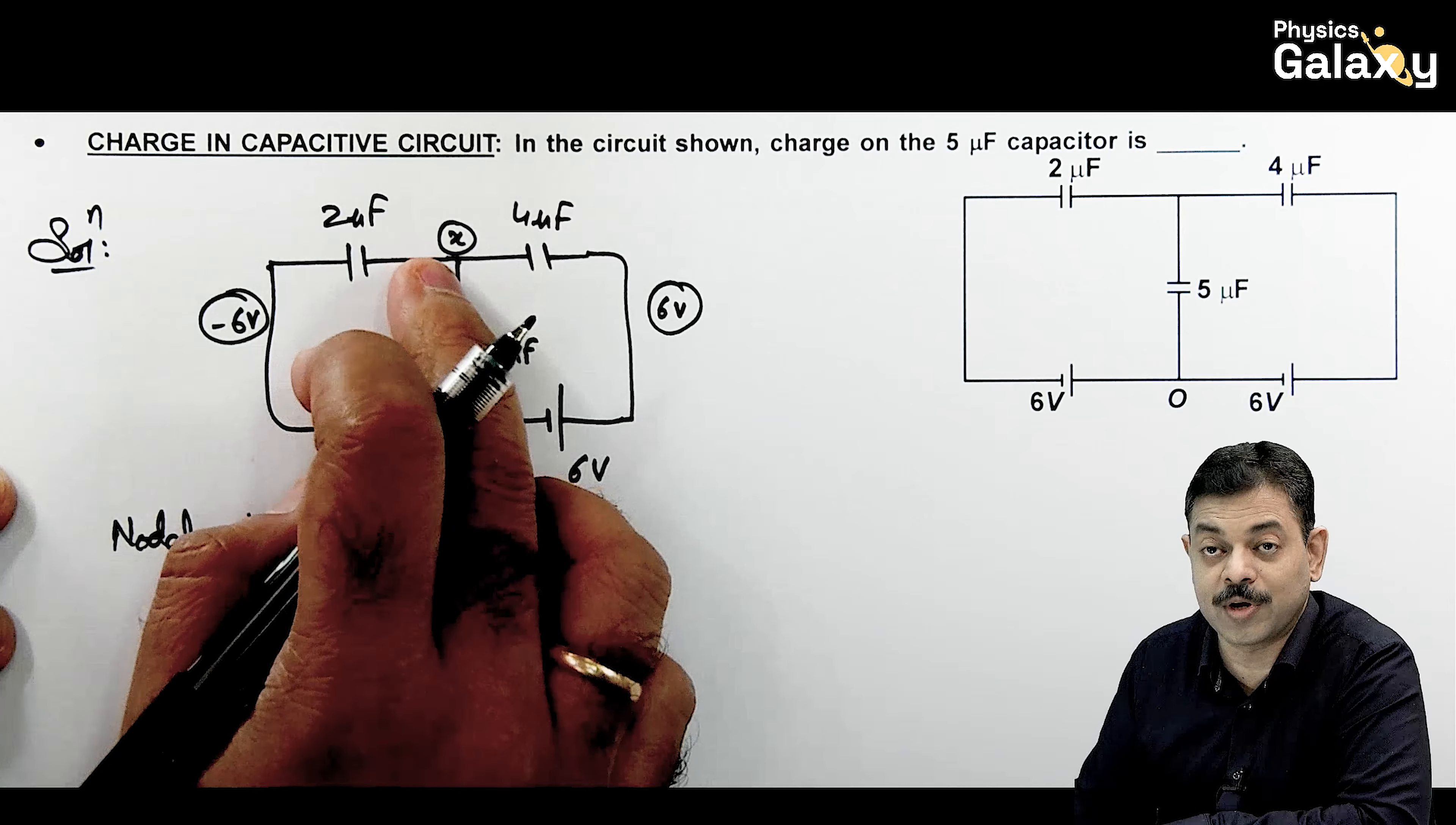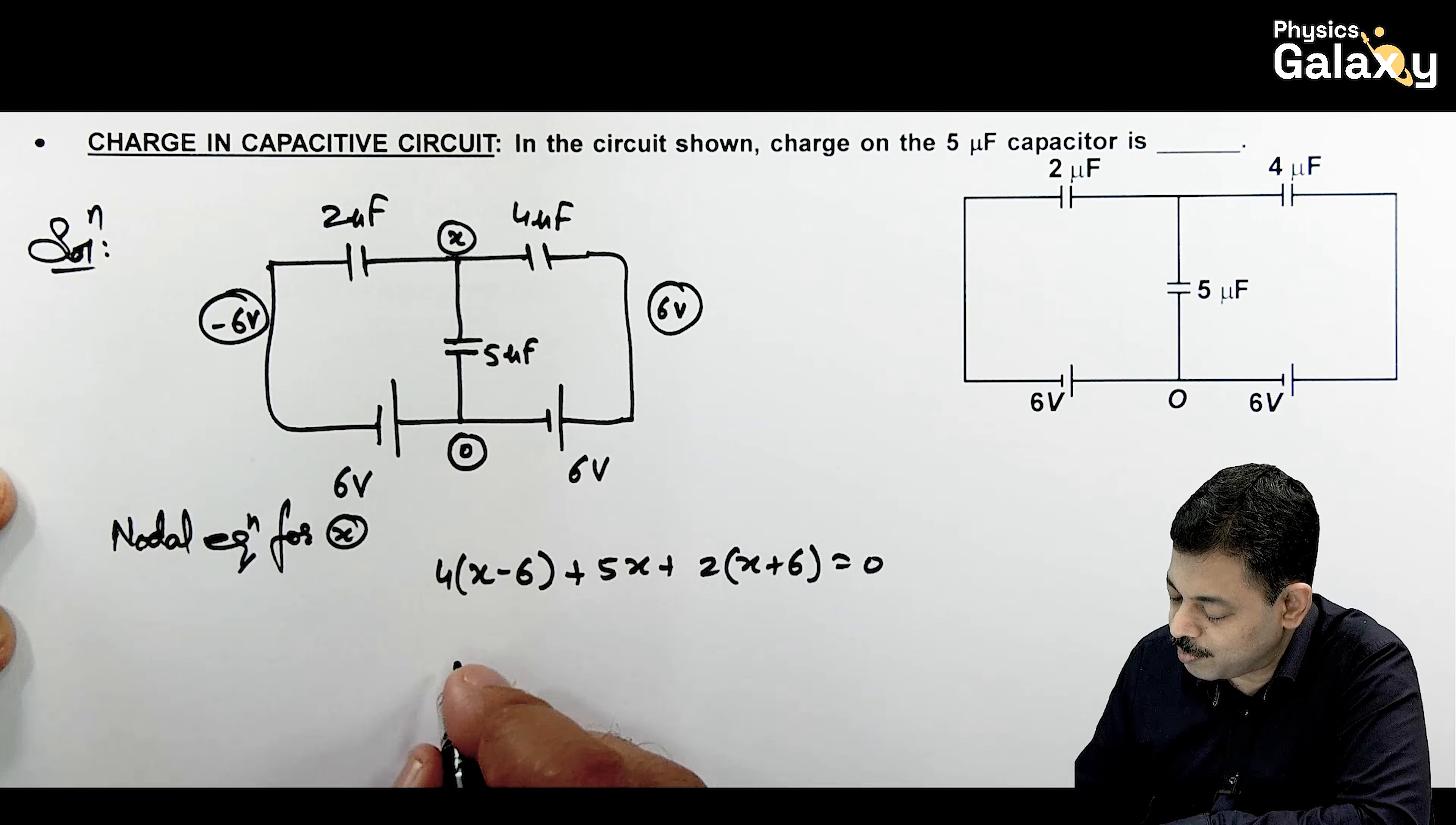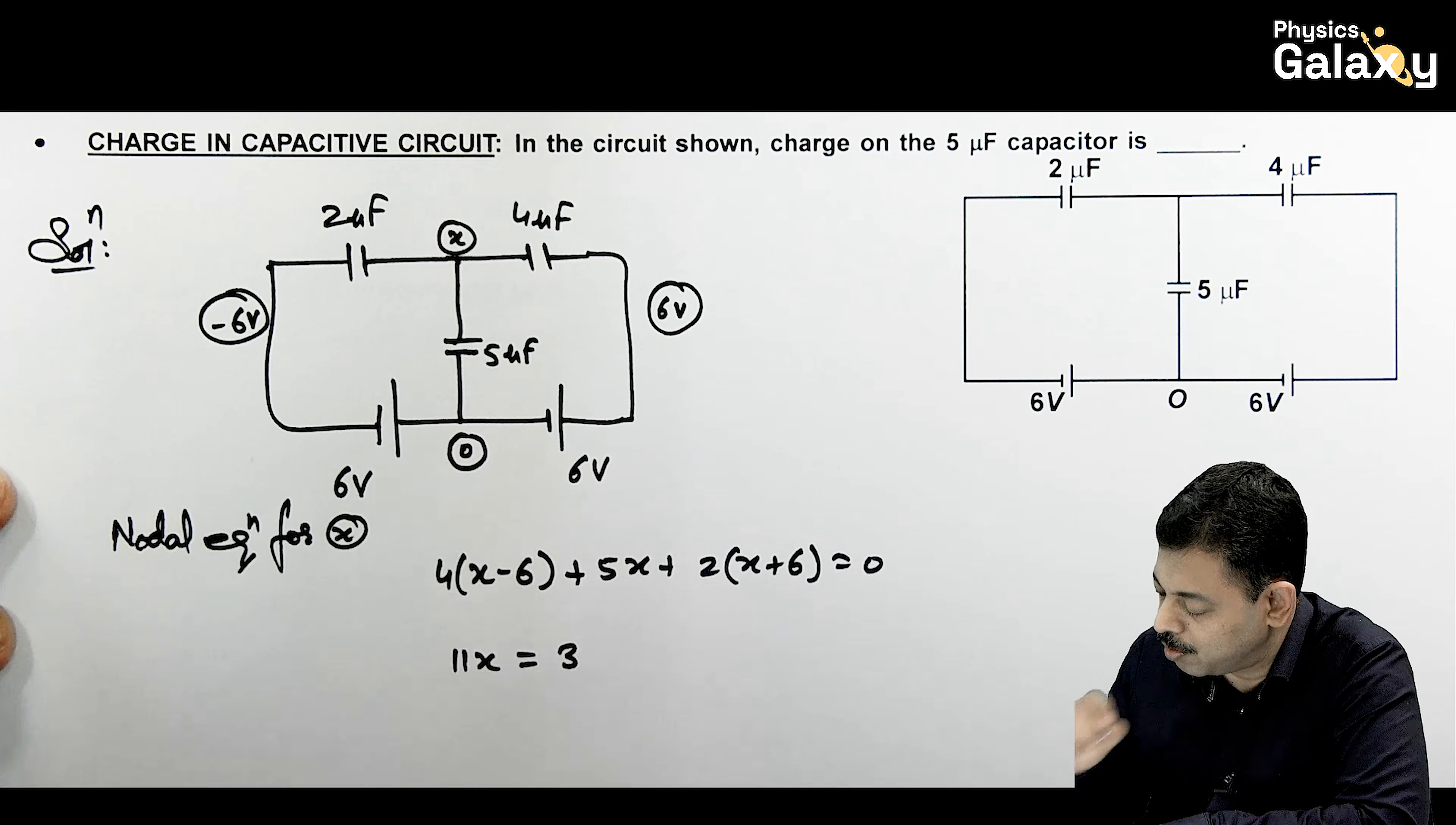For X, to X ka value a jaega. Here it is. In tino plates ke charges ka sum hum ko zero karna hai. This is 4 times (X-6) plus 5X plus 2 times (X+6) should be equal to 0. Simplify karenge. 5 plus 2 is 7 plus 4, 11X is equal to... This 24 plus 12. So this will be 34. So the value we are getting is...